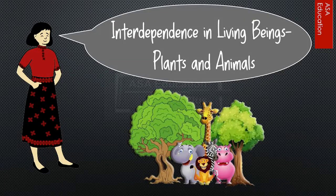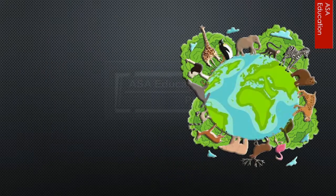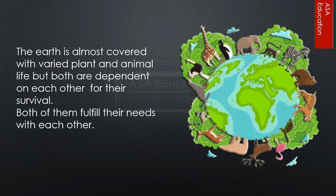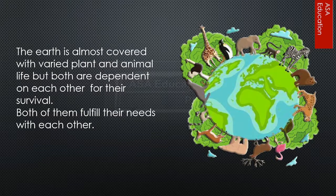Interdependence in living beings: plants and animals. The earth is almost covered with varied plant and animal life, but both are dependent on each other for their survival. Both of them fulfill their needs with each other.